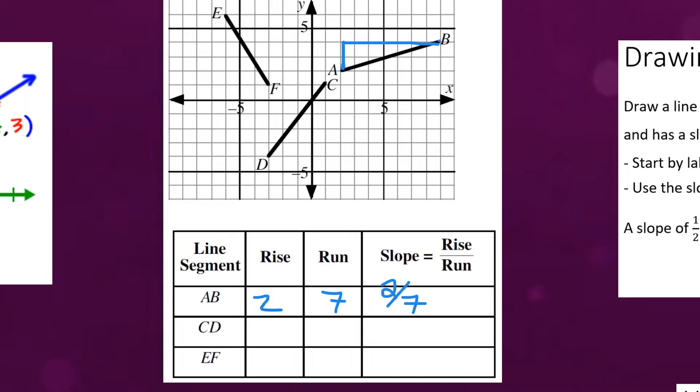Okay next one is the line segment CD. Now for this it's always easier to start from the left and move to the right. So I'm actually going to go from D to C. We are rising one two three four five and running one two three four. So that means our slope in that case would be five over four.